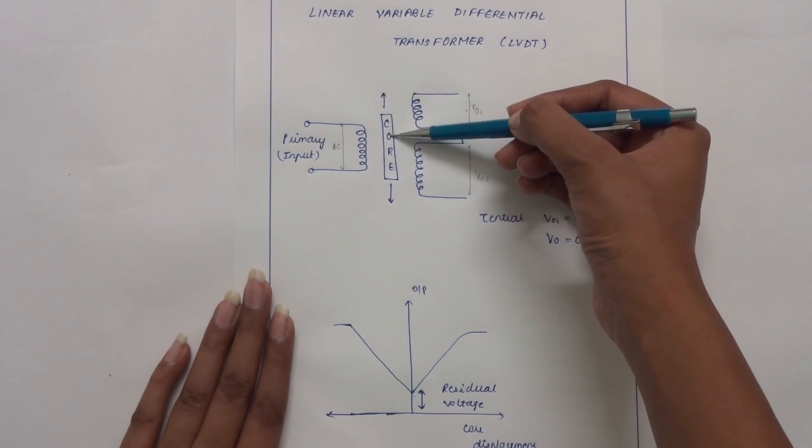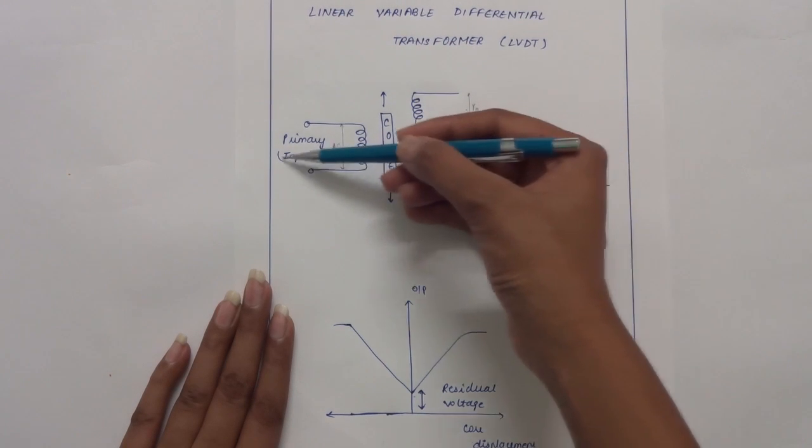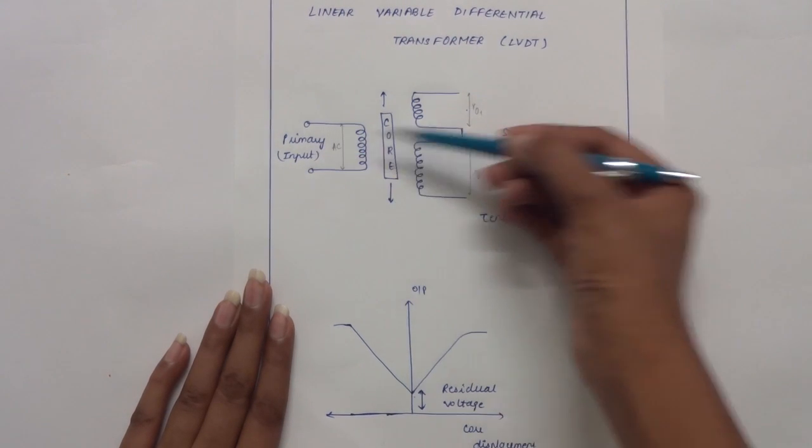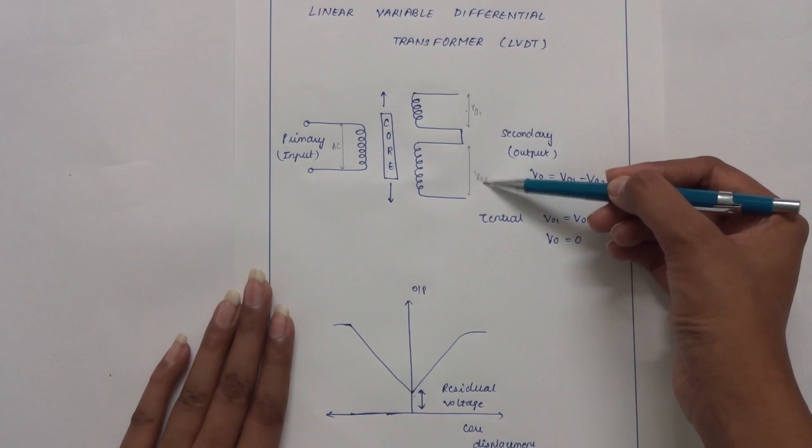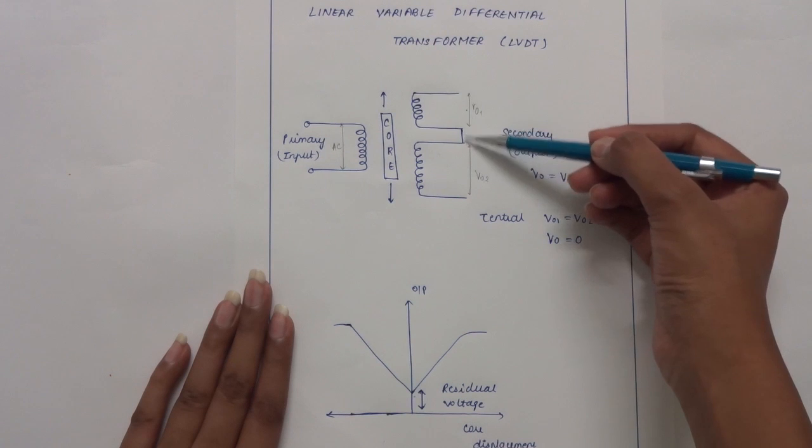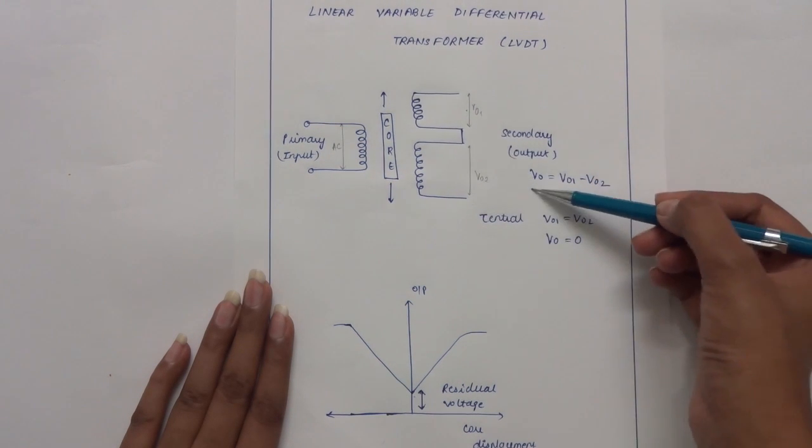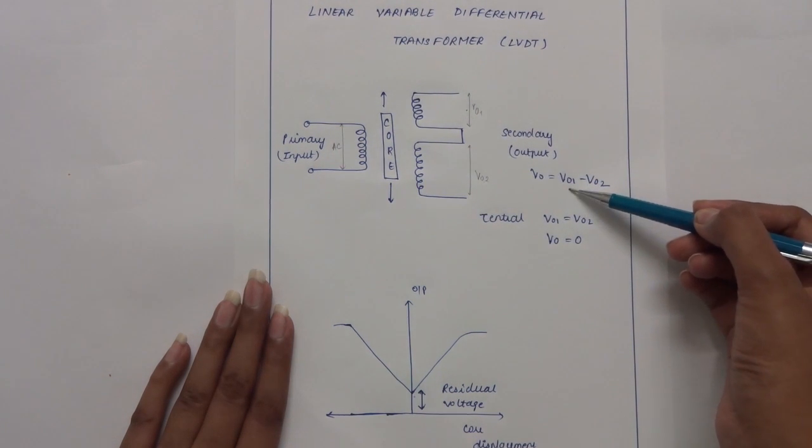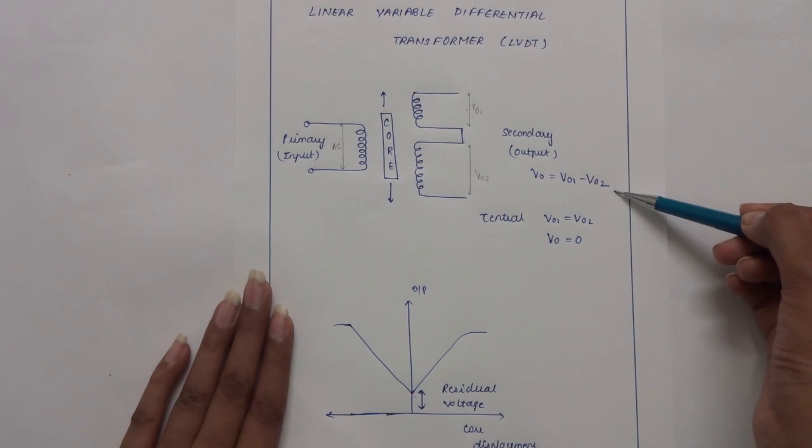An alternating current is fed into the primary and voltages V01 and V02 are induced in the secondary coils. As these coils are connected in series opposition, the output voltage V0 is V01 minus V02.